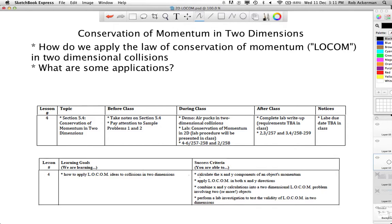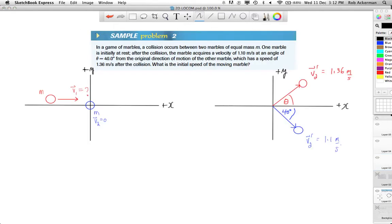Okay, and you're back, and now we're going to dive right into things with a look at a question in the textbook. This is in the Physics 12 textbook by Nelson, Sample Problem 2 in Section 5.4. Let's have a look. In a game of marbles, a collision occurs between two marbles of equal mass m. One of the marbles is initially at rest, and after the collision, it acquires a velocity of 1.1 meters per second at an angle of 40 degrees from the original direction of motion of the other marble, which has a speed of 1.36 meters per second after the collision. That's a mouthful, that sentence.